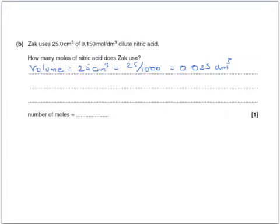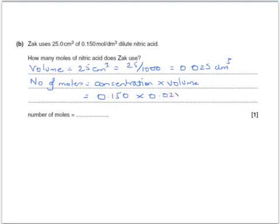Now, we remember the equation: the number of moles equals the concentration times the volume, where the concentration is in moles per cubic decimetre and the volume is in cubic decimetres. This equals 0.150 times 0.025, with an answer of 0.00375 moles.